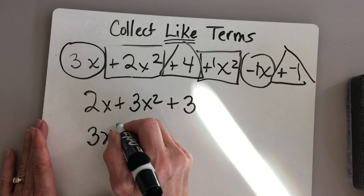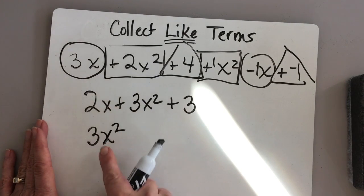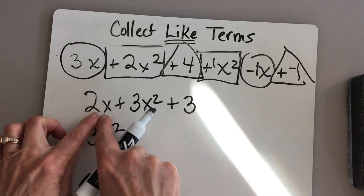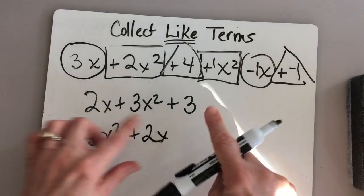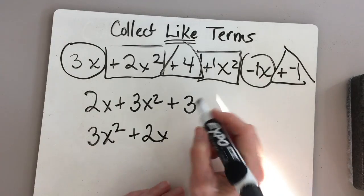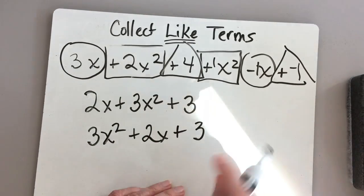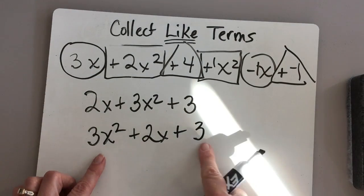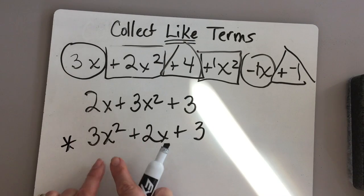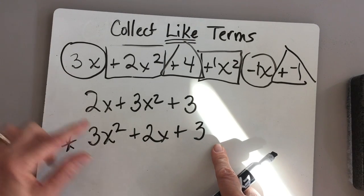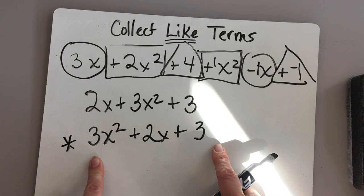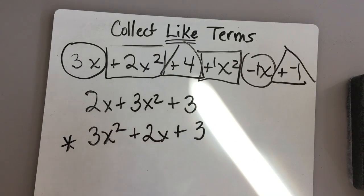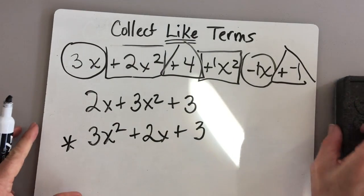It's kind of the proper way of doing it. So we put the 3x squared first, then the 2x would be next, and then our constant, the 3, would be last. This would be the better answer — it's a correct answer, but this ordering is the better form. That's how you collect like terms.